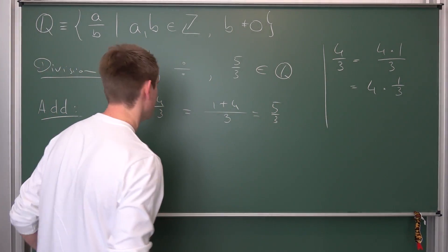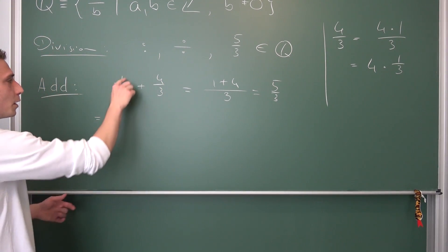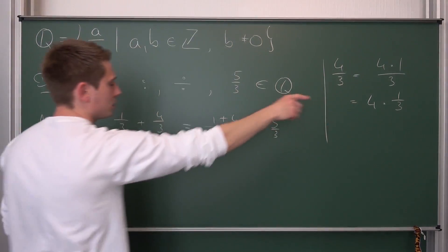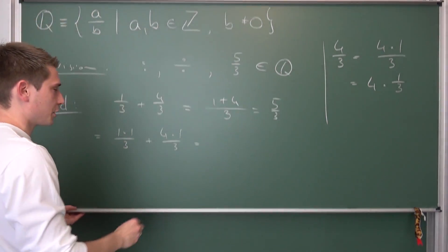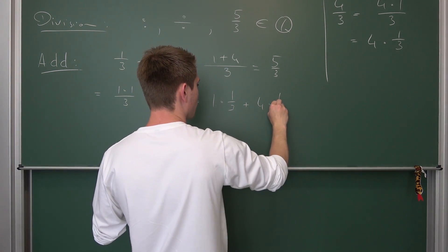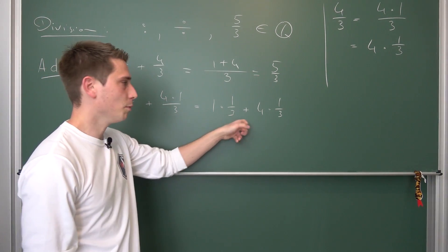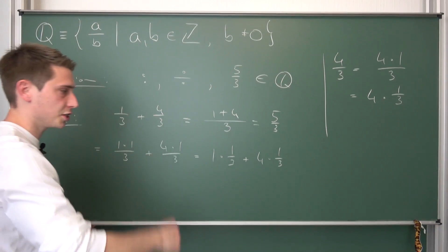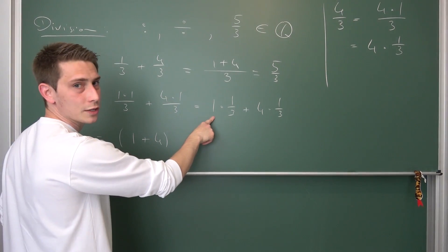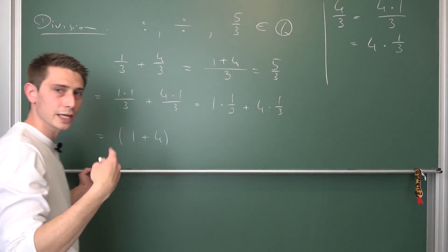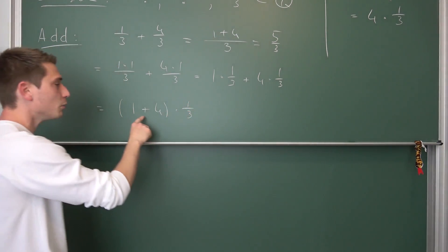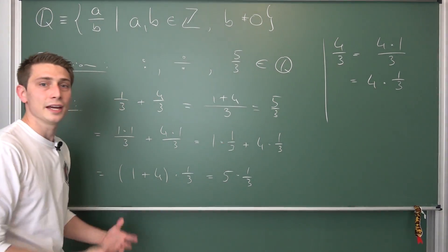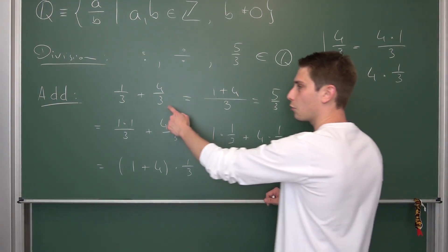So 1 third plus 4 over 3: rewrite it as 1 times 1 over 3 plus 4 times 1 over 3. Now 1 third is a common factor on both terms, so by the distributive laws which hold in Q, we can factor it out: this gives us 1 plus 4 times 1 third. Well, 1 plus 4 is 5, giving us 5 times 1 third, which by this notation is nothing but 5 over 3. This is why we need a common denominator when adding fractions.